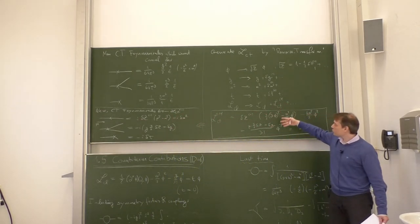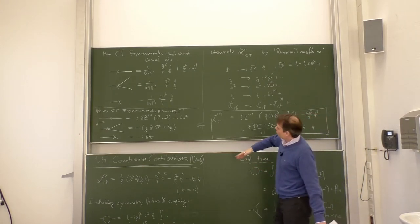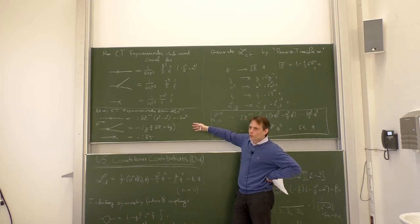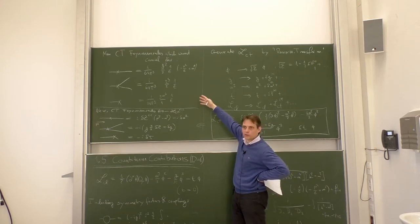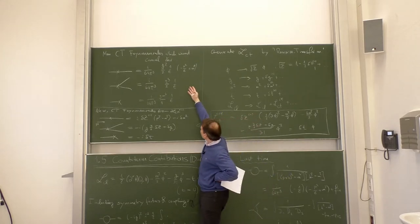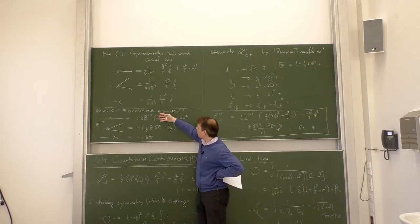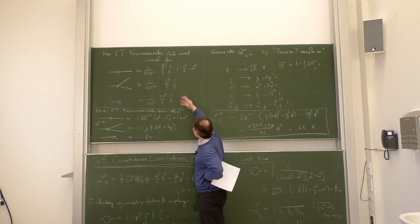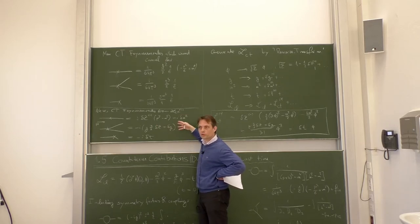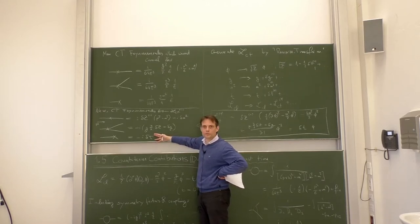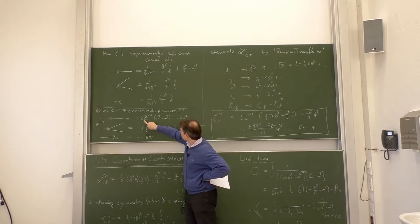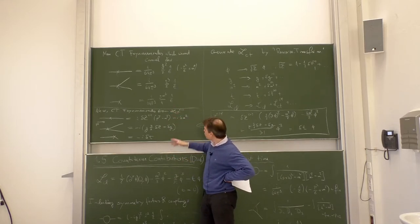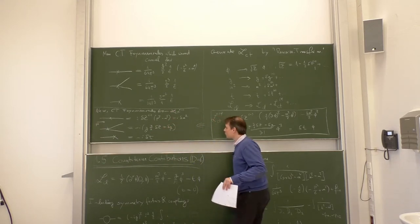The counterterm Feynman rules obtained by the renormalization transformation have exactly the form required to cancel the divergencies we found. The first is a polynomial of second degree in momentum and mass — matching the self-energy divergence. The second is a constant in momentum — matching the three-point divergence. The third is also constant in momentum — matching the tadpole. We have constants δZ, δm², δg, δt, and this comparison shows we can adjust these renormalization constants to cancel all divergencies.